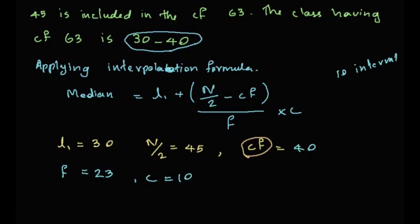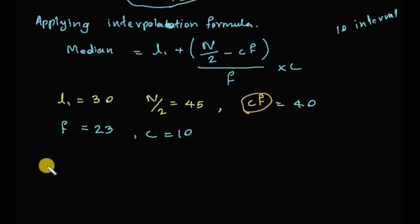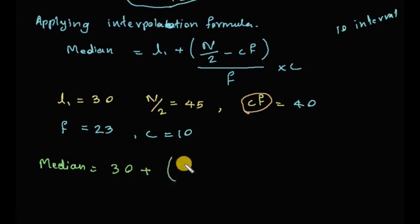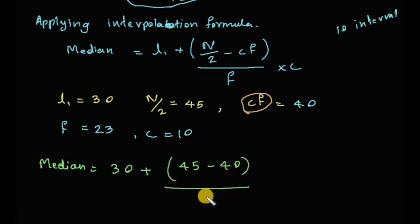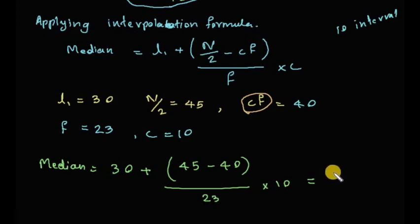Substituting into the formula: Median = 30 + (45 minus 40) divided by 23, into 10. Simplifying: 30 + (5/23) × 10, which gives us the answer 32.17. Therefore, 32.17 is the median of our given data.